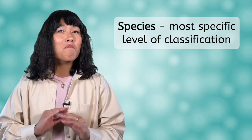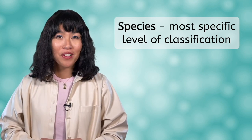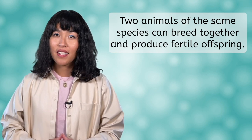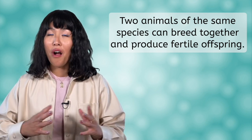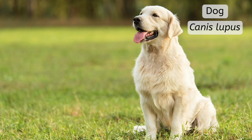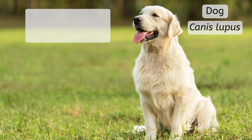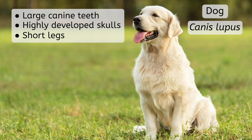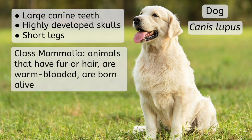A species is the most specific level in the taxonomic hierarchy. By definition, two animals of the same species can breed together and produce fertile offspring — meaning their offspring can also produce more offspring. For example, a dog, Canis lupus. The genus Canis refers to animals that typically have large canine teeth, highly developed skulls, and short legs compared to their body. Going further up the taxonomic chart, dogs are also a member of the class Mammalia, which includes animals that have hair or fur, are warm-blooded, are born alive, and whose females produce milk to feed their young.